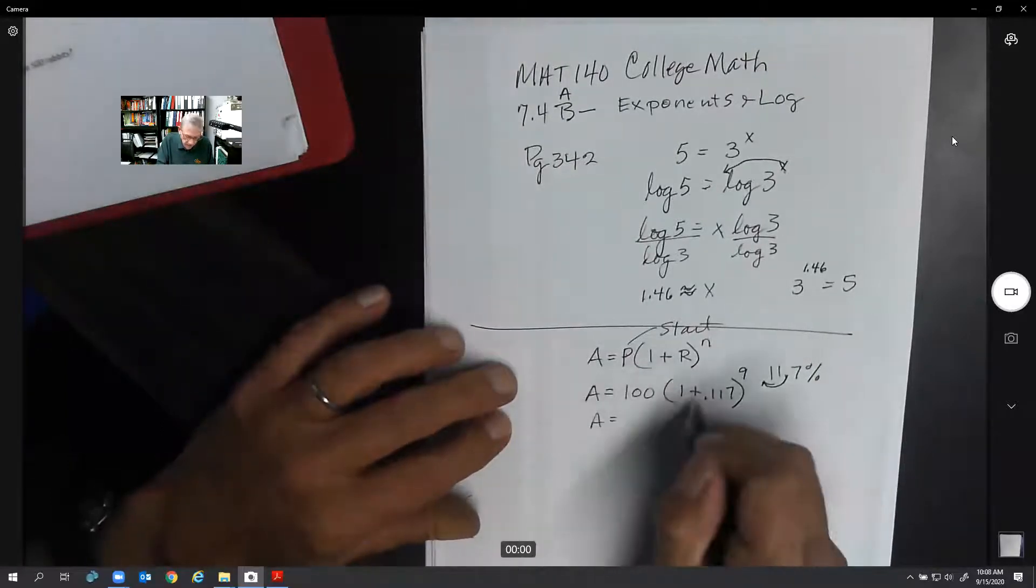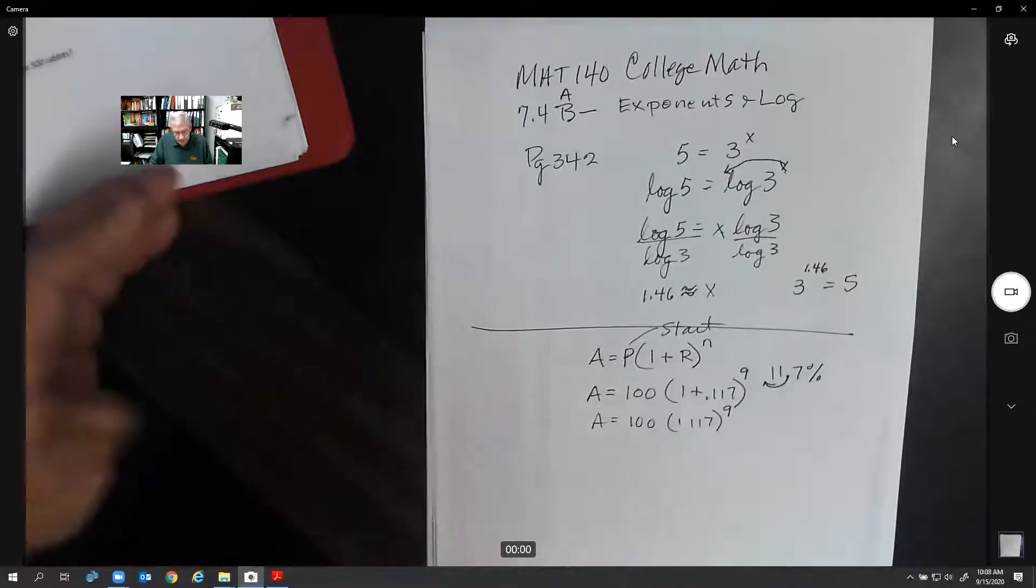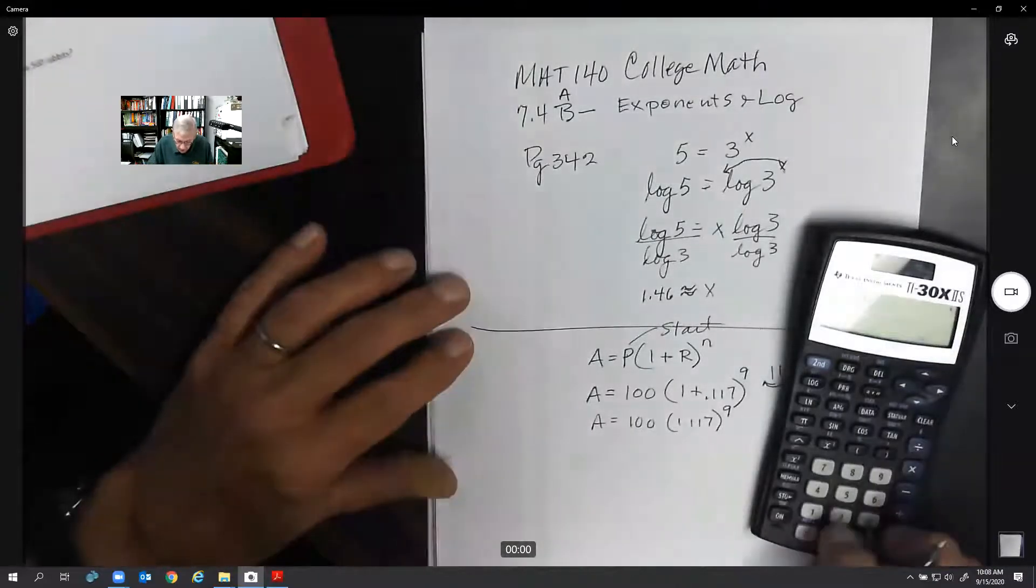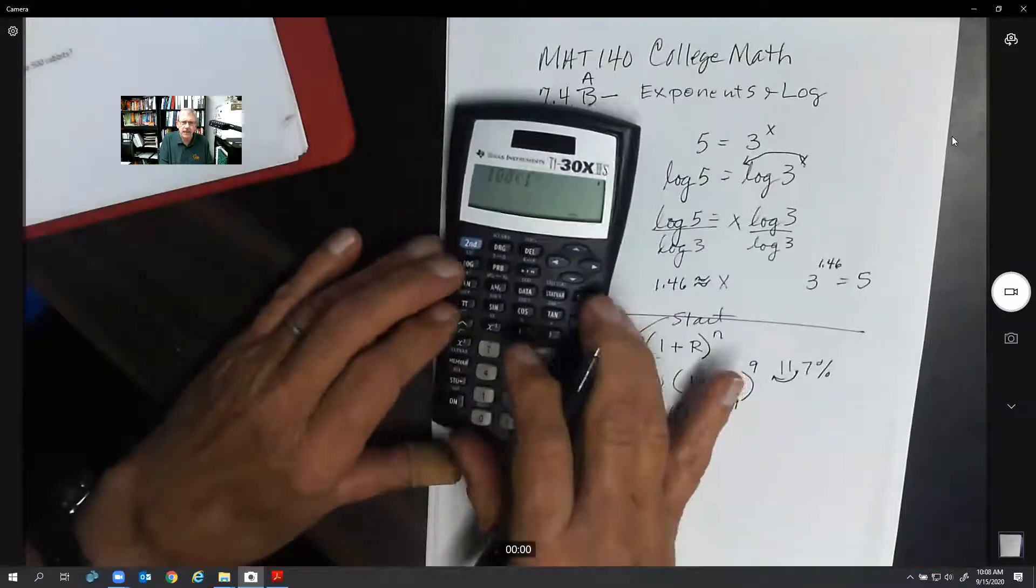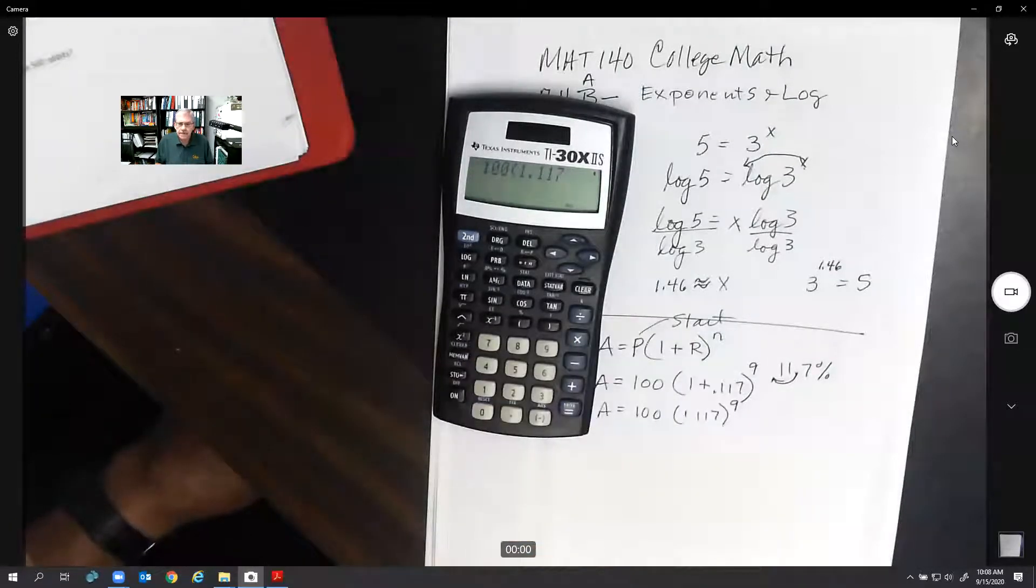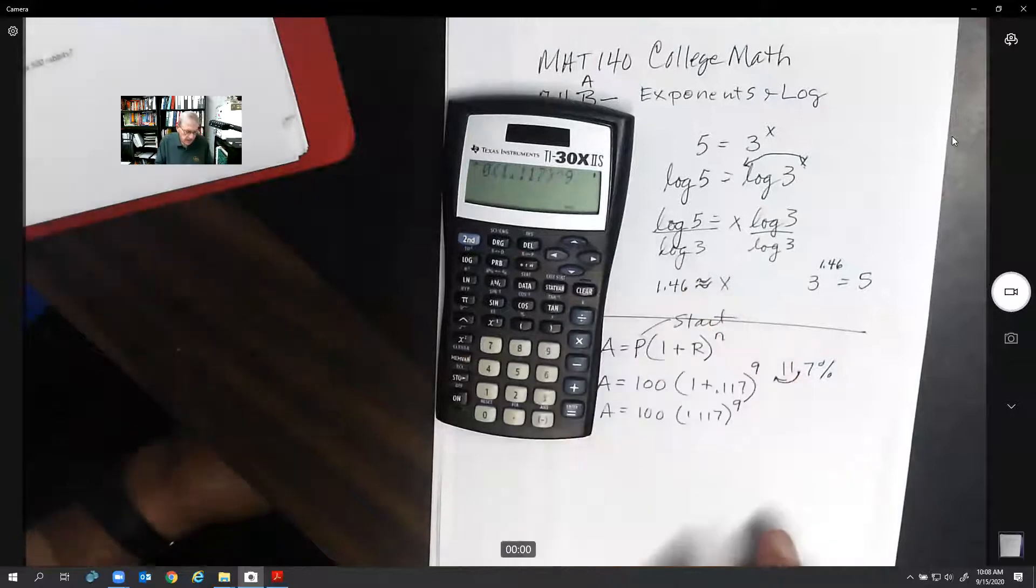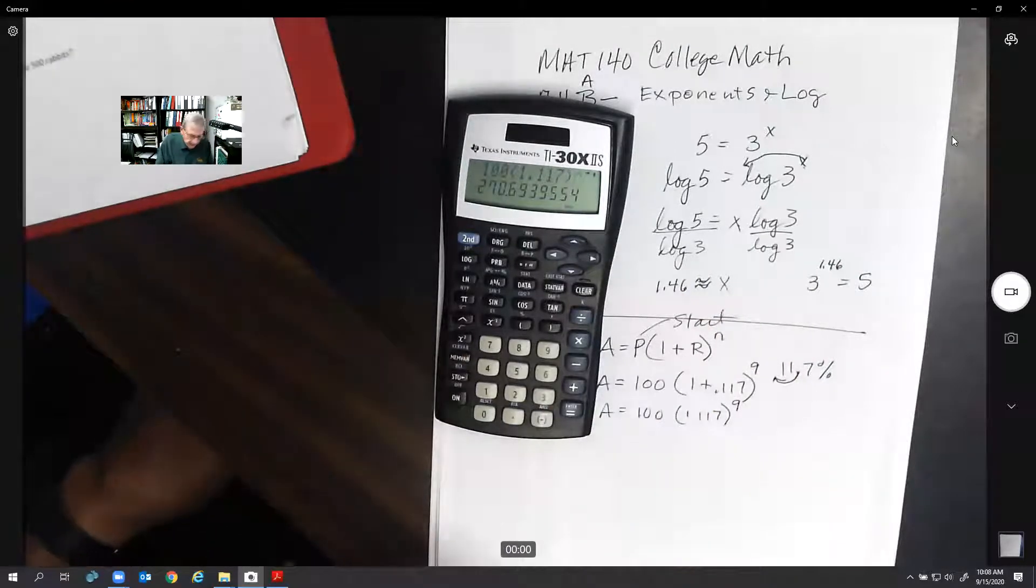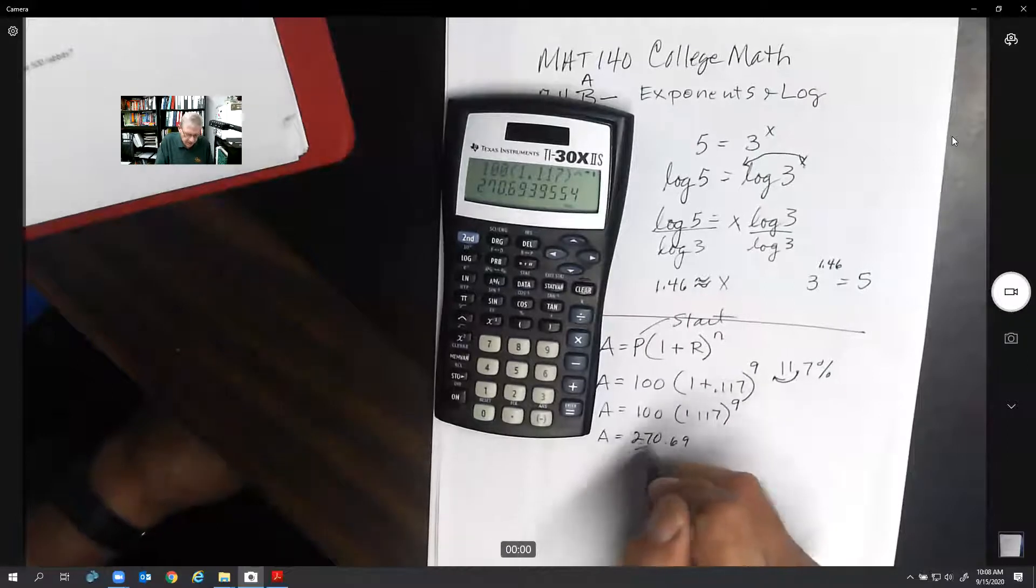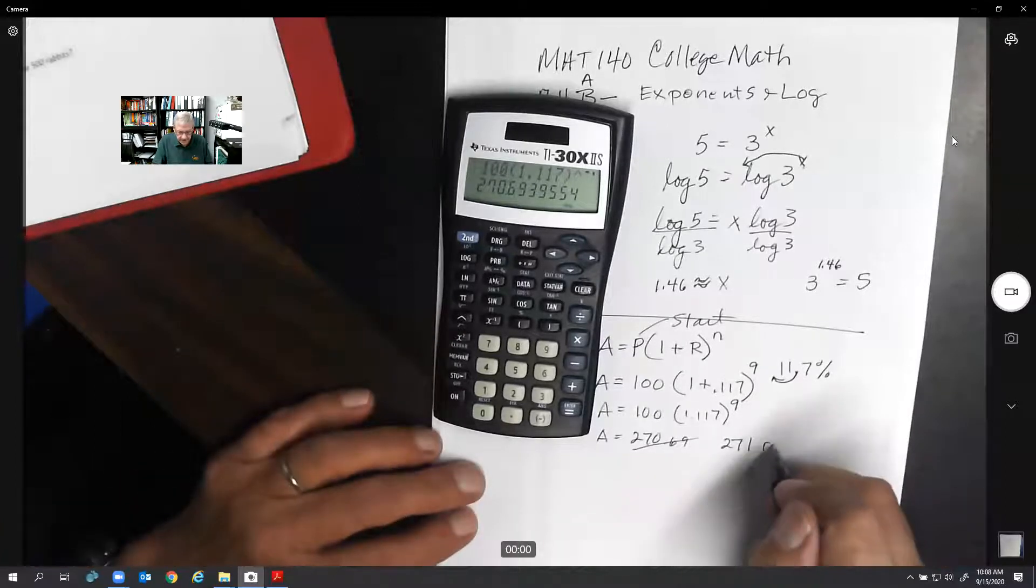Let's calculate that out. We're going to add that together. It'll be 1.117 raised to the 9. We can just put it in our calculator that way. 100 parentheses, 1.117 raised to the 9th equals 270.69. So we're going to round this off. These are actual animals. 271 rabbits at the end of nine days.